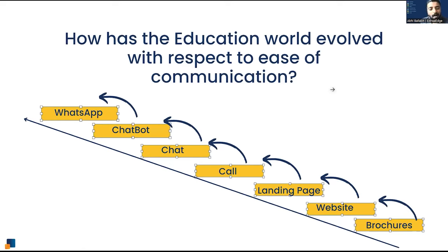There's a gradual increase in how these communication modes have evolved over time. It's clearly evident that WhatsApp, bots, and chat are complementing websites, landing pages, and brochure distribution. Calling is still very prevalent, but these three modes — WhatsApp, bots, and chat — are very important to disseminate information and marketing material.